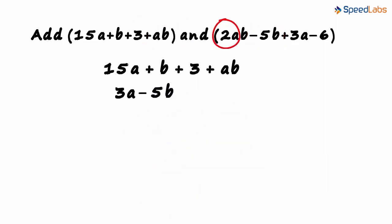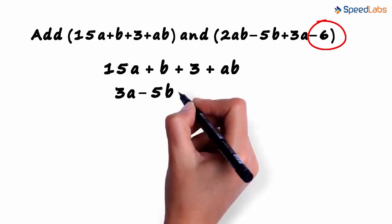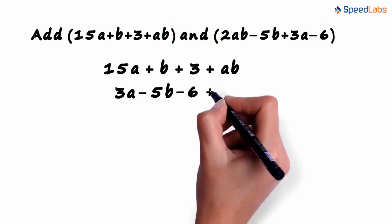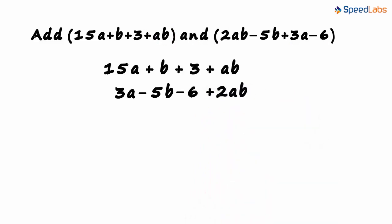3 and minus 6 are like terms. So we write minus 6 under 3. 2ab and ab are like terms and that's why we write 2ab here. Now all we have to do is add each column.